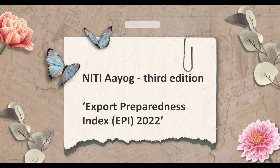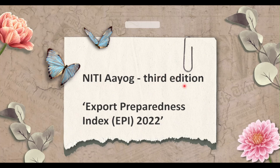Welcome to this video. I will be briefly discussing the Export Preparedness Index 2022, third edition, released by NITI Aayog. NITI Aayog is a think tank that gives policy inputs to the government. It has replaced the Planning Commission. The Export Preparedness Index is related to exports.